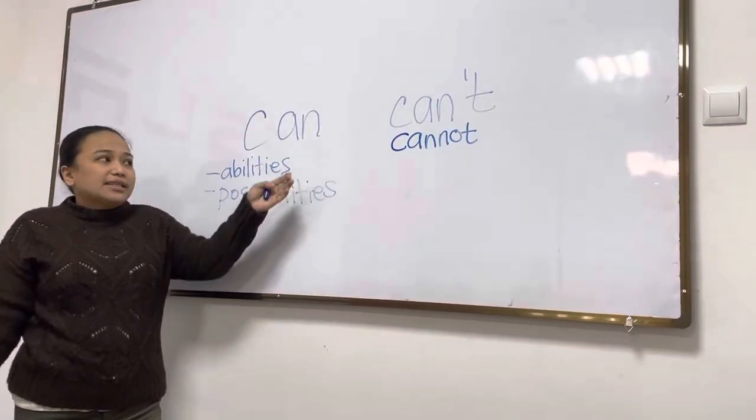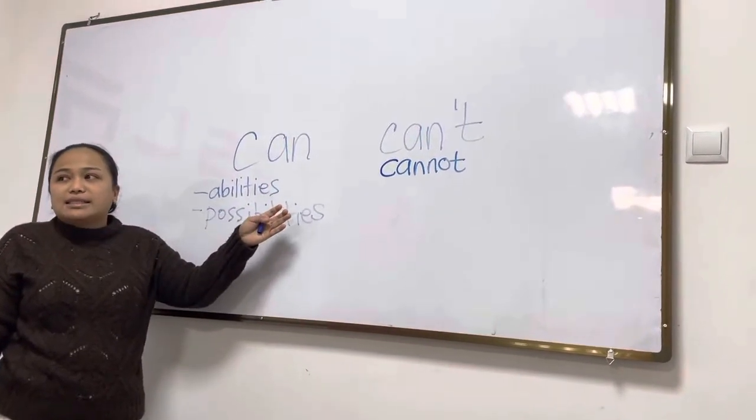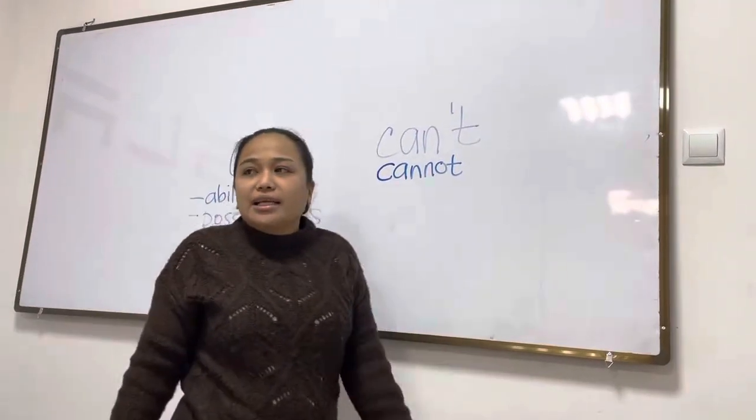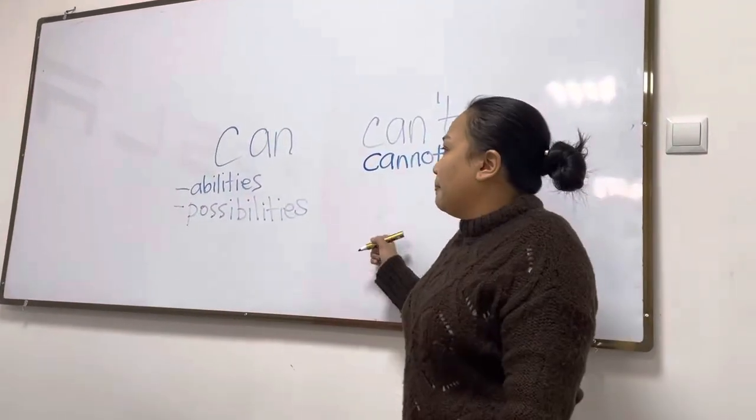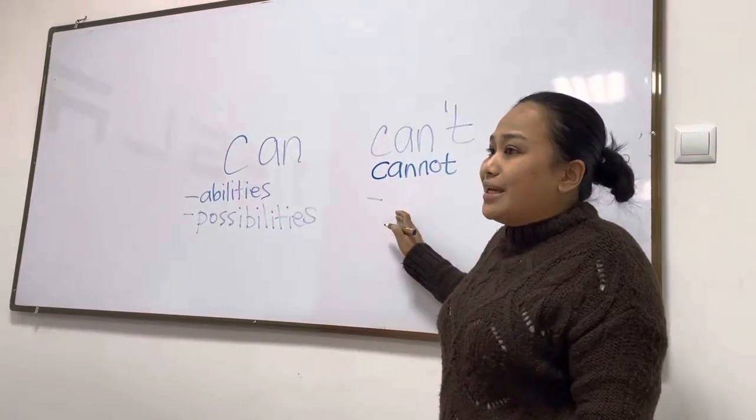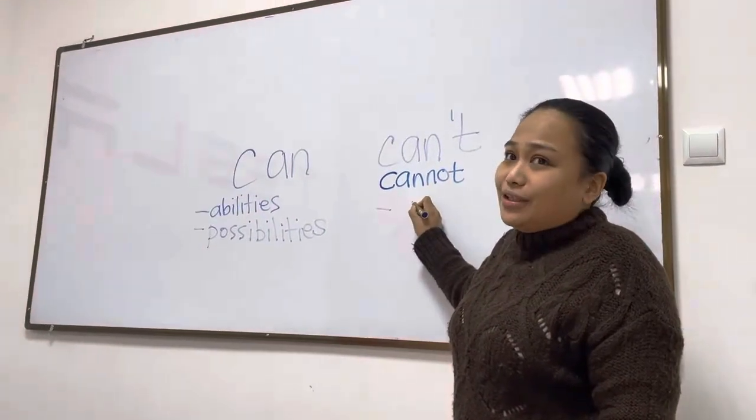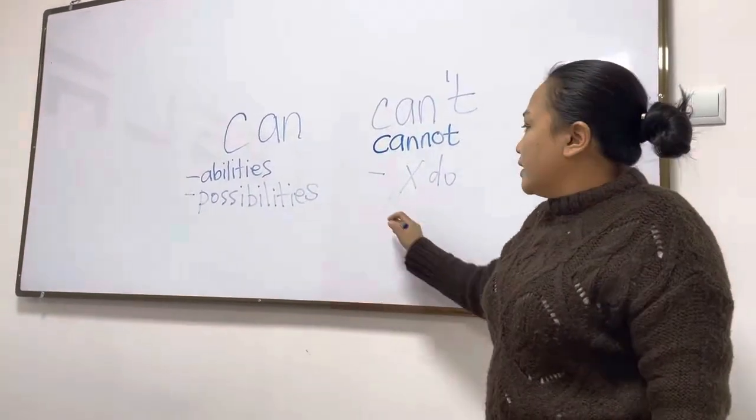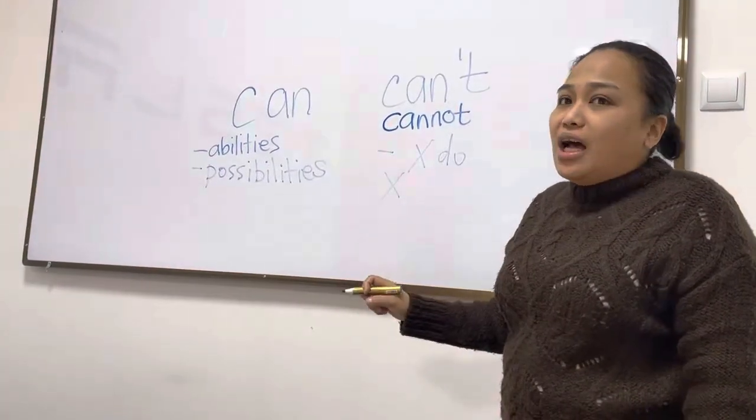So again, we use can for abilities and possibilities. And for cannot, it's the opposite. Okay? We use this for the things that we cannot do, or we use can't for the things that are not possible.